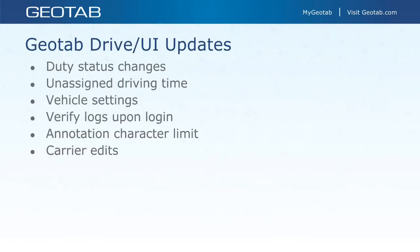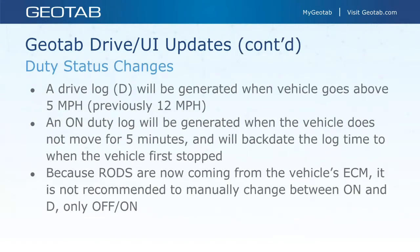Here are some of the Geotab Drive and UI updates we'll go over. Starting with duty status changes — this ties into pulling that engine data. A drive log will be generated when the vehicle goes above five miles per hour; previously that was 12 miles an hour. An on-duty log will be generated when the vehicle does not move for five minutes, and it will backdate the log time to when the vehicle first stopped. So if I'm driving and I stop my vehicle at one o'clock, put it in park, and at 1:05 I still haven't moved, it's going to change me to on-duty and backdate that time to when I actually stopped — one o'clock.